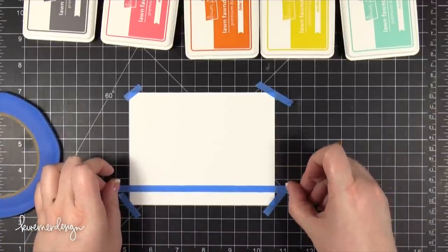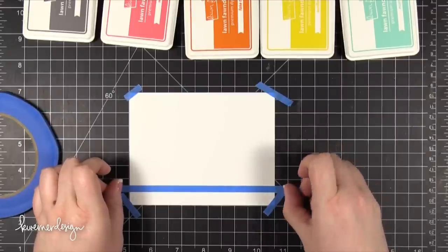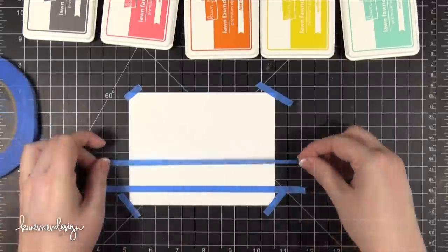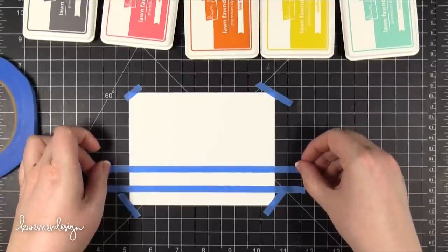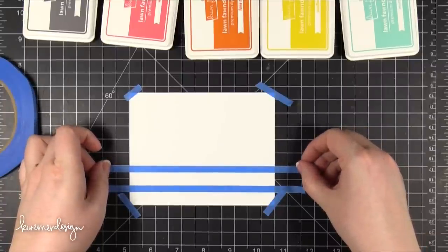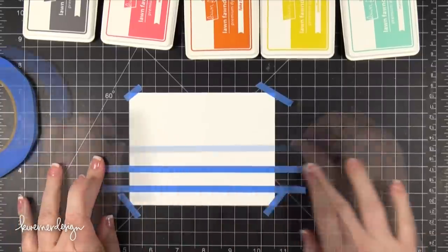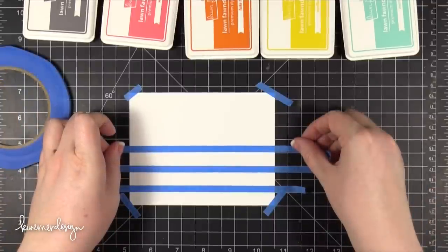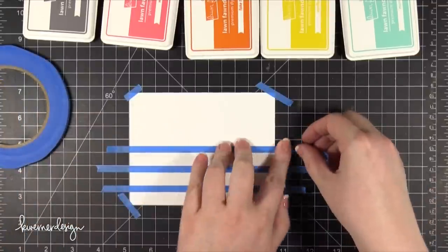I'm just using a strip of that masking tape and lining it up on both sides of the paper here with the lines on the grid mat. This creates 1/5 inch stripes that I'm going to be using to add ink to. So I'm just going to apply all those on there.